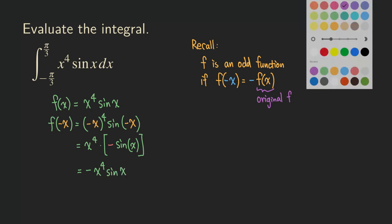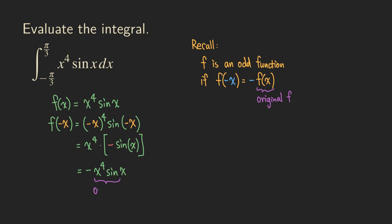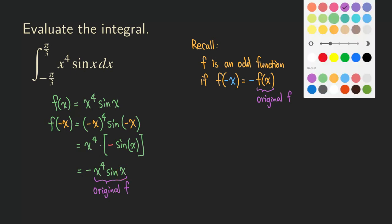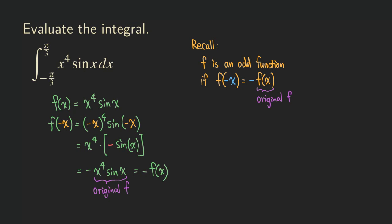And do you see that x to the fourth times sine of x is also the original function? We actually have a minus sign in front of it, so we can rewrite that as negative f of x. We just showed that f of negative x is equal to negative f of x, and that means f is an odd function.